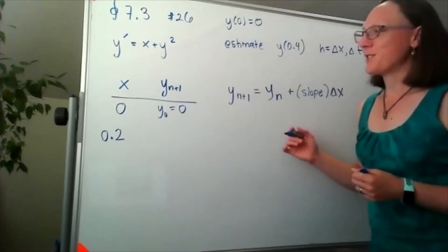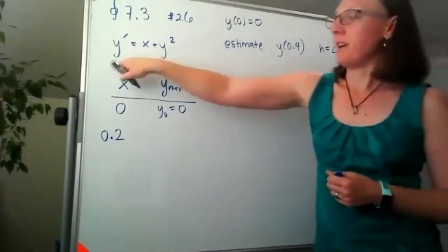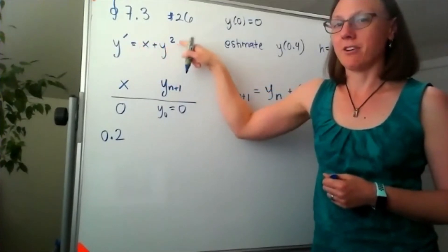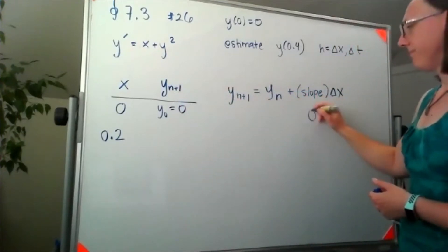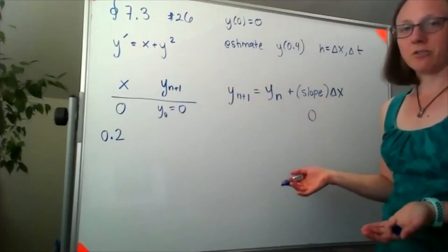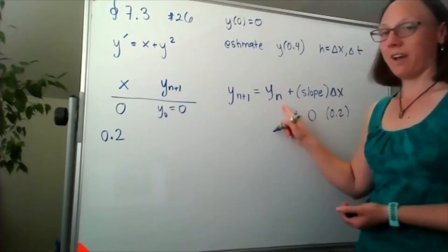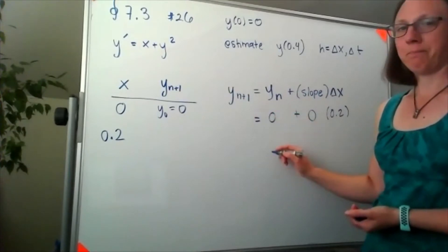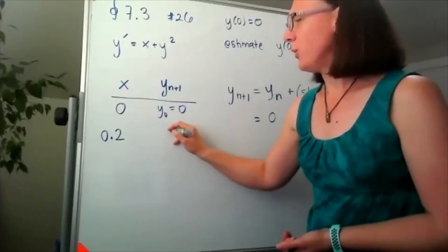If I'm standing at the point (0,0), then that slope is going to come from y prime. If I plug in 0 plus 0 squared, I still get a slope of 0. This is not a very interesting problem so far. I would multiply by that delta x of 0.2 and add that to the y value that I'm currently sitting at, which is 0, which means that our new y value would still be 0.